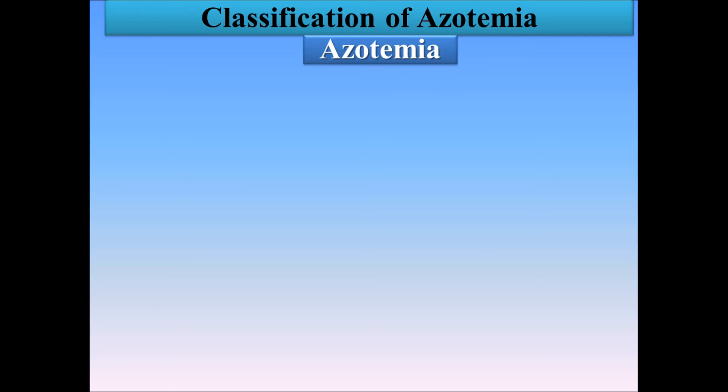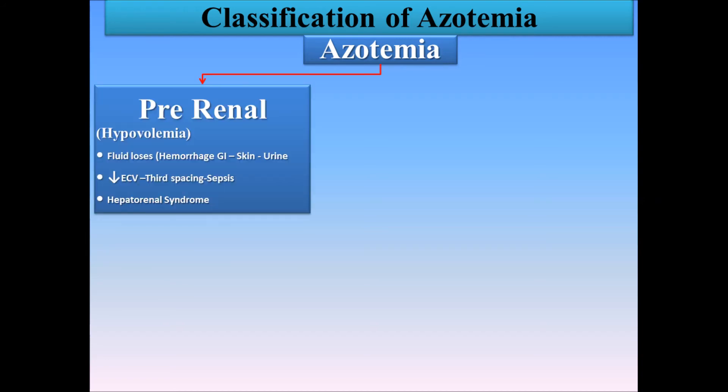In pre-renal azotemia, there isn't enough perfusion to the kidneys. Any form of shock — whether due to dehydration, bleeding, decreasing extracellular volume, third-spacing such as burns, hypoalbuminemia, sepsis, or even renal artery stenosis — results in decreasing renal perfusion, which ends up increasing BUN and creatinine.